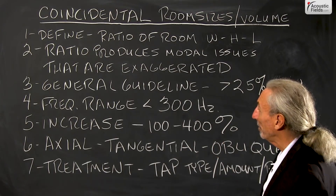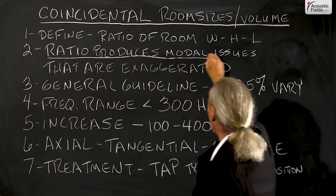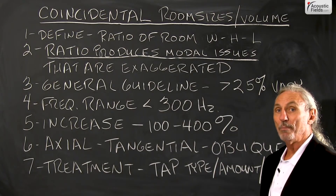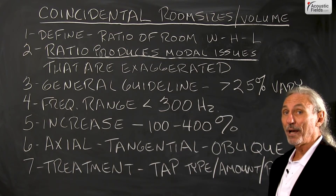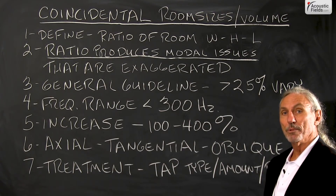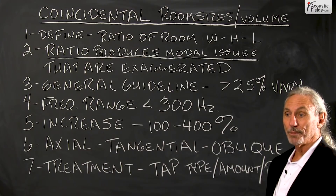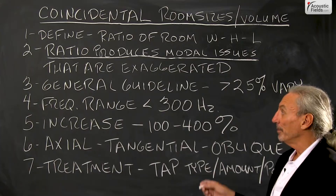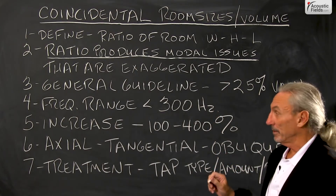We all know from past videos that it's the ratio of the room — width, height, and length — that determines how much modal pressure issues we're going to have below 300 cycles and how severe they're going to be. I've seen some rooms recently with plus 19 dB bumps below 100 cycles. These are very small rooms. When you have that kind of situation, you have to be very careful, especially with coincidental room sizes and your ratios.